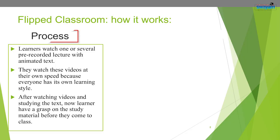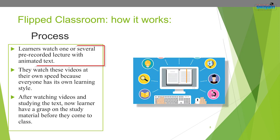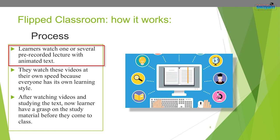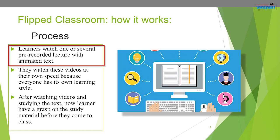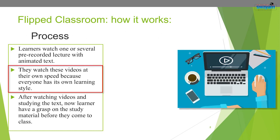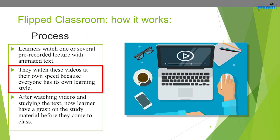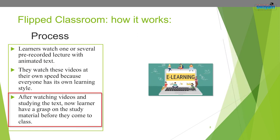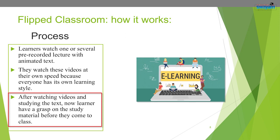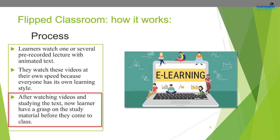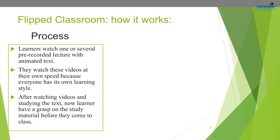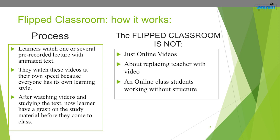After studying the four pillars, let us explore the process of working of the flipped classroom. Learners first watch one or several pre-recorded lectures with animated text at their own speed, since everyone has their own learning style. After watching the videos and studying the text, learners have a grasp on the study material before they come to class. It should be noted that the flipped classroom is not just about replacing the teacher with video or having students work without structure.